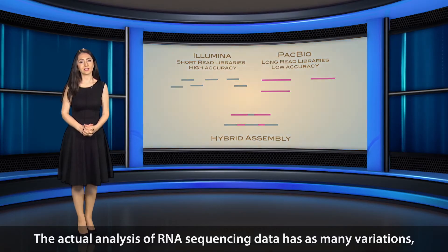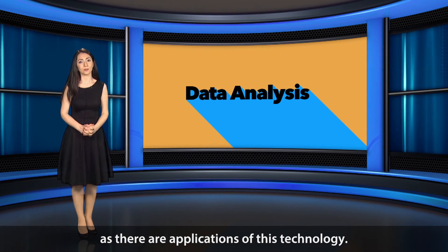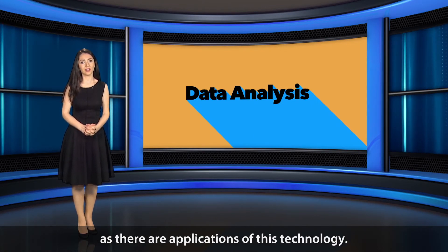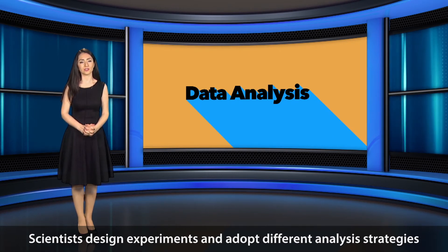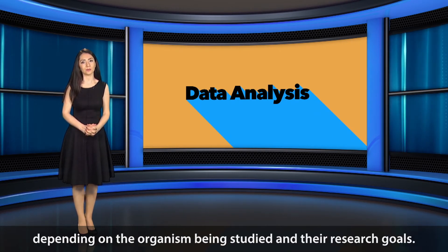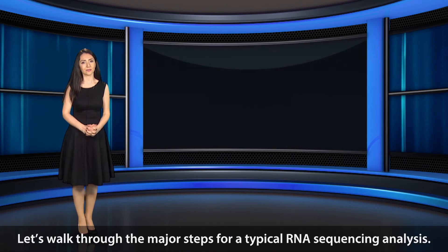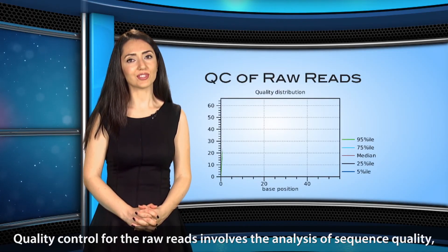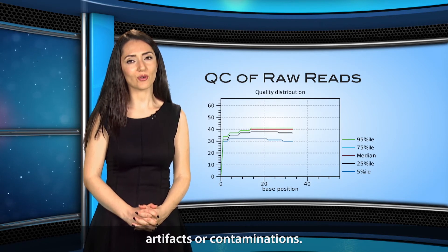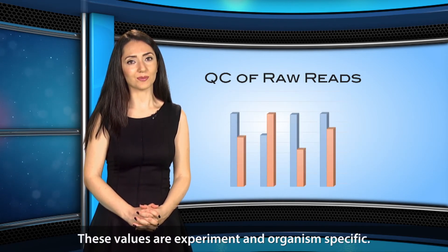The actual analysis of RNA sequencing data has as many variations as there are applications of this technology. Scientists design experiments and adopt different analysis strategies depending on the organism being studied and their research goals. Let's walk through the major steps for a typical RNA sequencing analysis. Quality control for the raw reads involves the analysis of sequence quality, artifacts, or contaminations. These values are experiment and organism-specific.